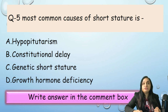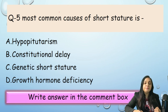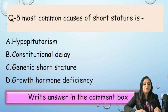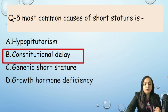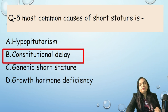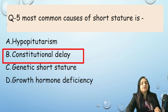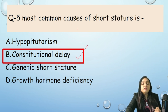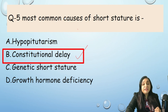Question 5: What is the most common cause of short stature? Options: A) Hypopituitarism; B) Constitutional delay; C) Genetic short stature; D) Growth hormone deficiency. The most common cause is constitutional delay in growth and puberty — it is very prevalent everywhere. Correct answer: B.